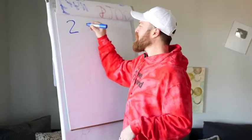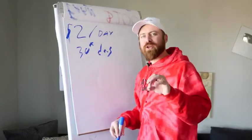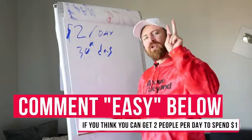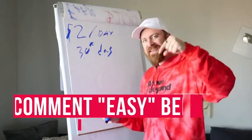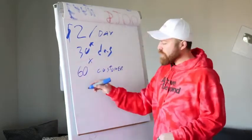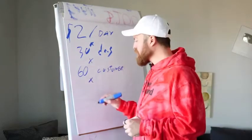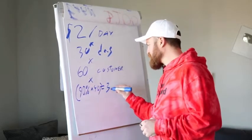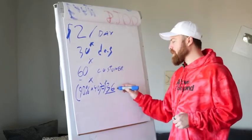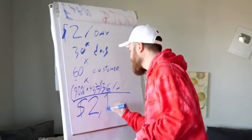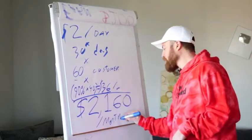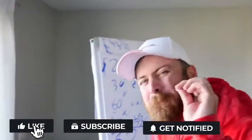Imagine if you just got 2 people every single day to spend $1. How much recurring revenue would you have? Let's do the math: 2 people a day times 30 days — hopefully you're good enough to get 2 people to spend $1 — that means you're getting 60 customers. The recurring revenue is 90% of $40, which is $36. So you have 60 customers times $36 a month — that leaves you with $2,160 a month in recurring revenue. If you can get 2 people to spend $1 every day, you will be getting over $2,000 a month in recurring revenue.